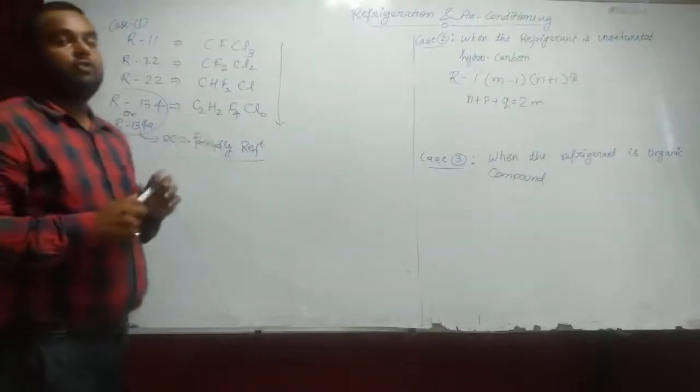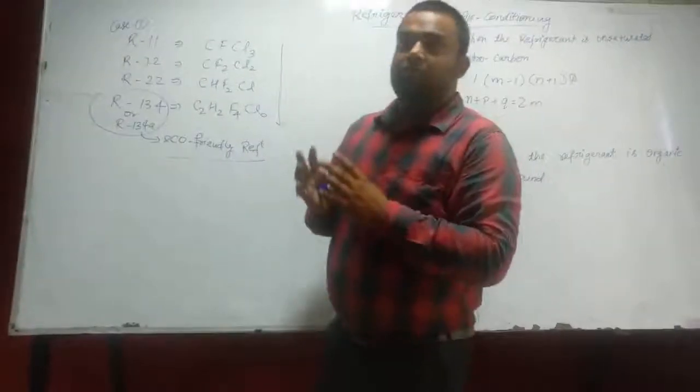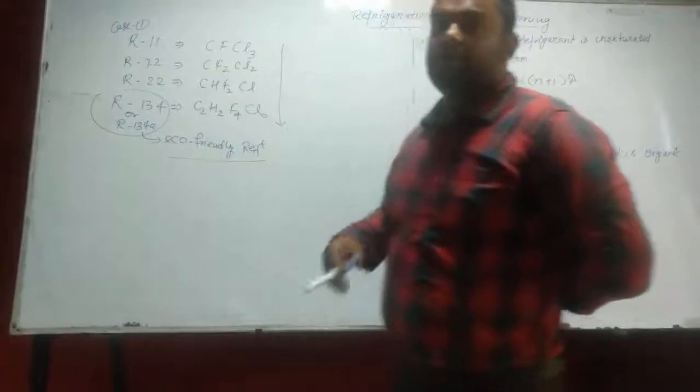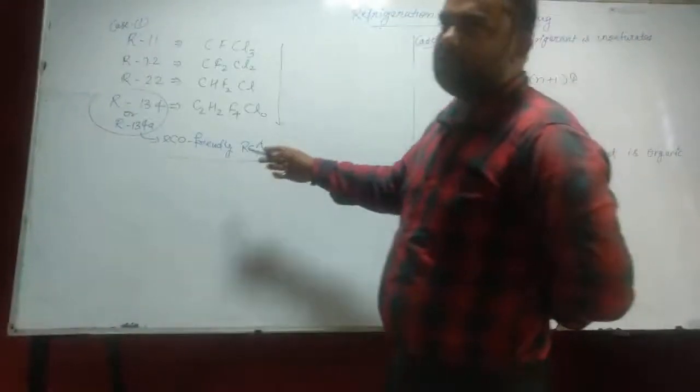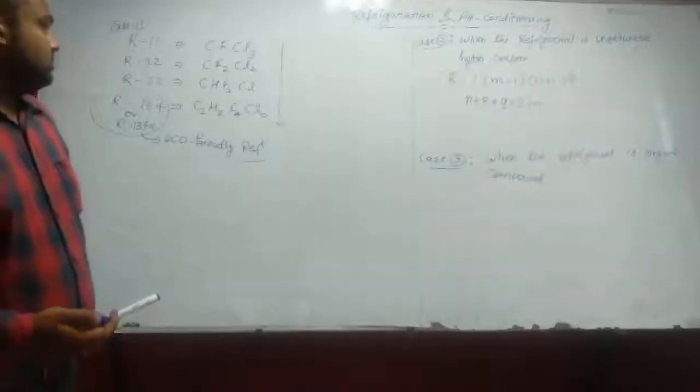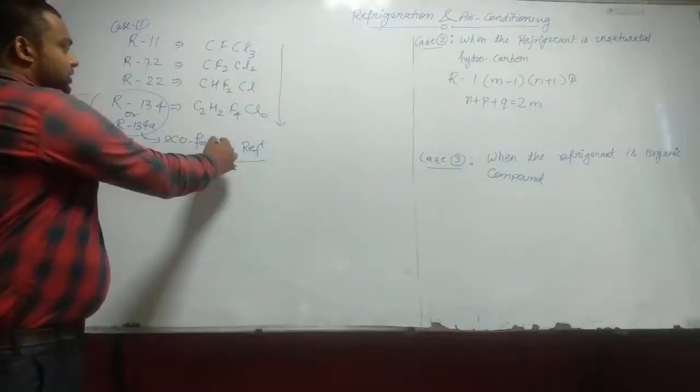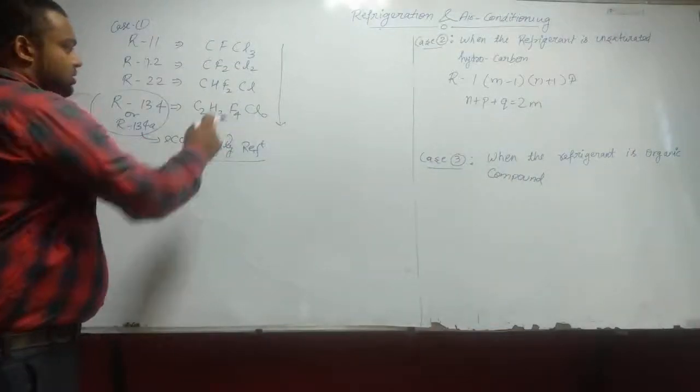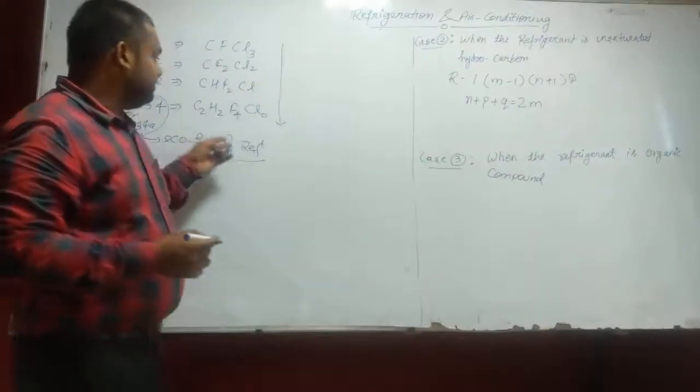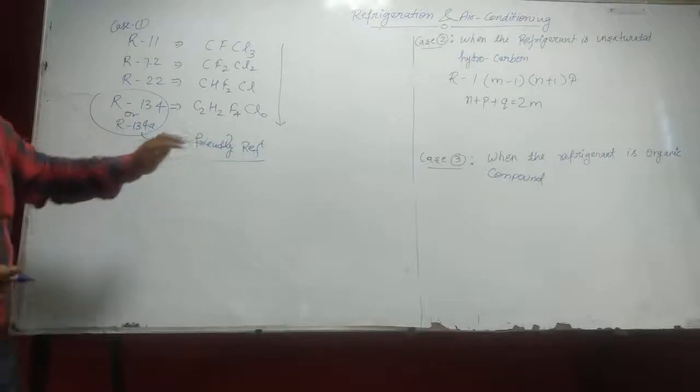Why we are saying this eco-friendly refrigerant? Because here the tendency of chlorine element is 0. Because the chlorine element is hazardous for our environment. It depletes the ozone layer which saves us from the ultraviolet rays. UV rays are filtered out by the ozone layer, and ozone layer is depleted by the chlorine element. So here is no chlorine element, so it is known as the eco-friendly refrigerant.